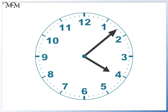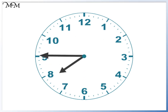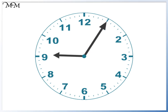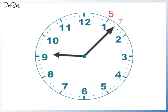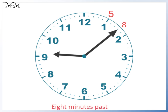In this example, we'll start at nine o'clock. The minute hand then moves around to one, which is five minutes past. This is six minutes past. Seven minutes past. Eight minutes past, so it's eight minutes past the hour. The hour hand has moved past nine, so the time is eight minutes past nine.